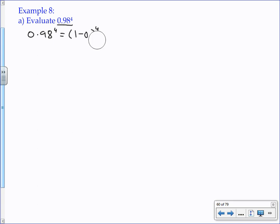We can say that 0.98 to the power of 4 is 1 subtract 0.02 all to the power of 4 because 1 take away 0.02 is 0.98, which means that we can think about 1 minus 0.02 to the power of 4 as a binomial term. That's what it is and we can expand it fully using our binomial theorem.